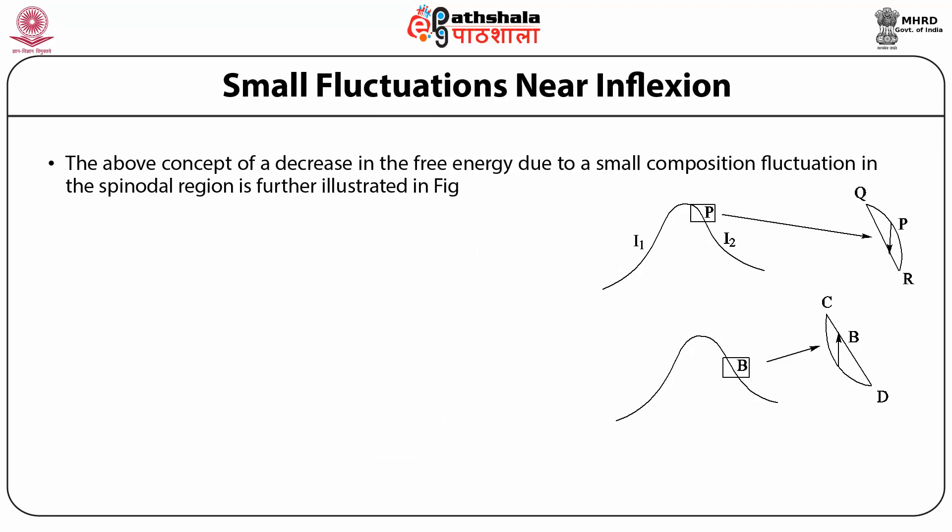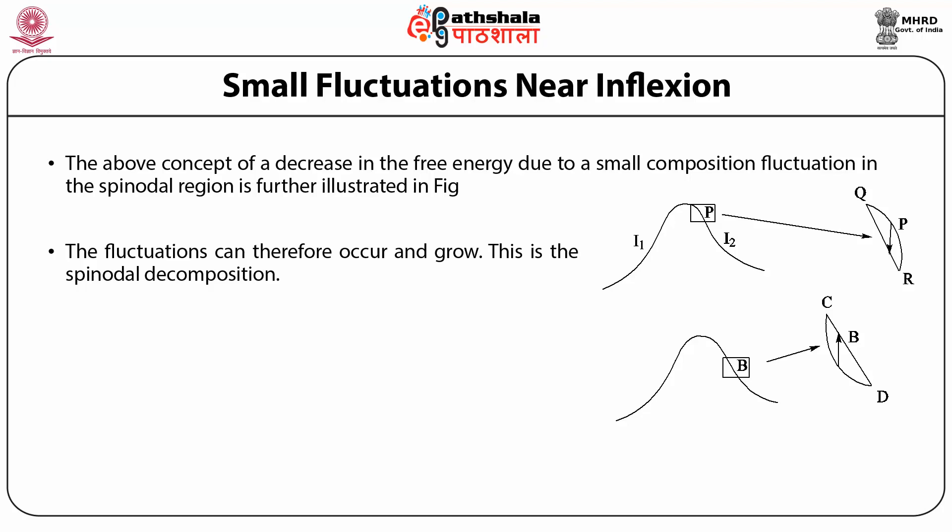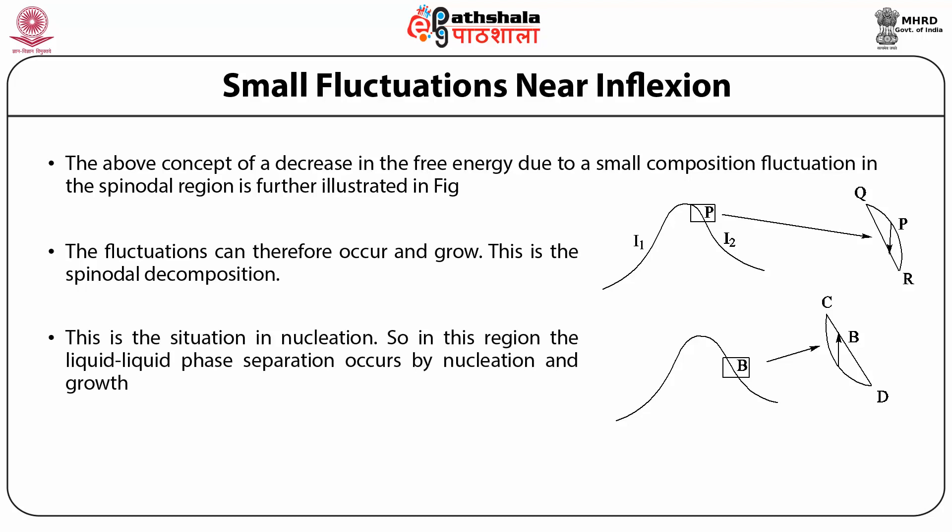For an initial composition P, a small fluctuation leads to compositions Q and R. The free energy change follows the arrow and decreases, so the fluctuations can occur and grow — this is spinodal decomposition. For any composition between the spinodal dome and the binodal dome, a small fluctuation leads to an increase in free energy. This is the situation in nucleation, so in this region the liquid-liquid phase separation occurs by nucleation and growth.